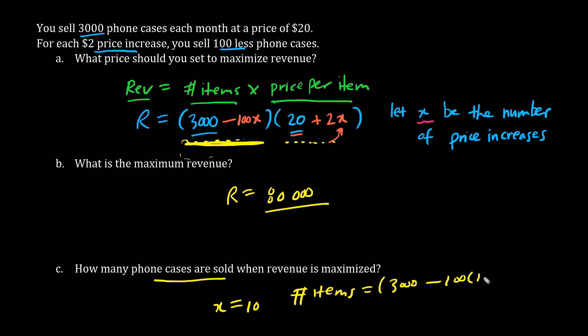It's actually the number of items equals 3,000 minus 100x, and that x happens to be 10. 100 times 10 is 1,000, and 3,000 minus 1,000 is 2,000. So 2,000 phone cases must be sold to maximize the revenue.